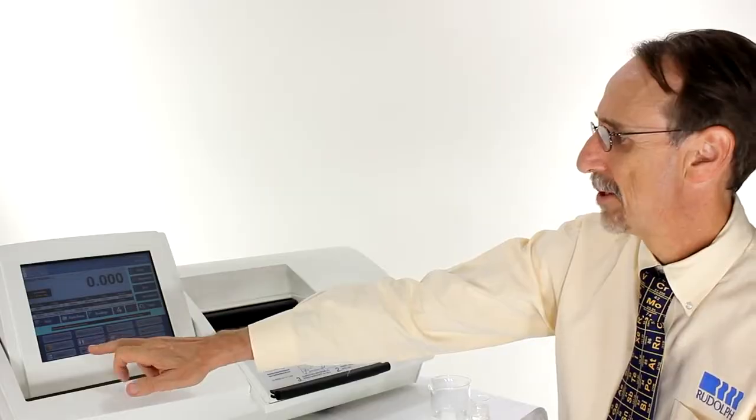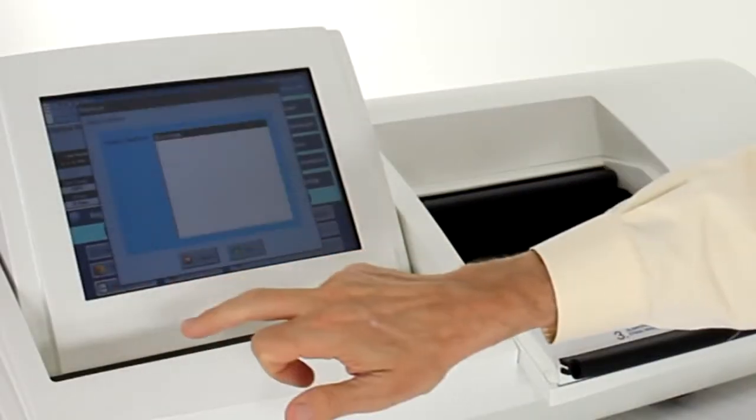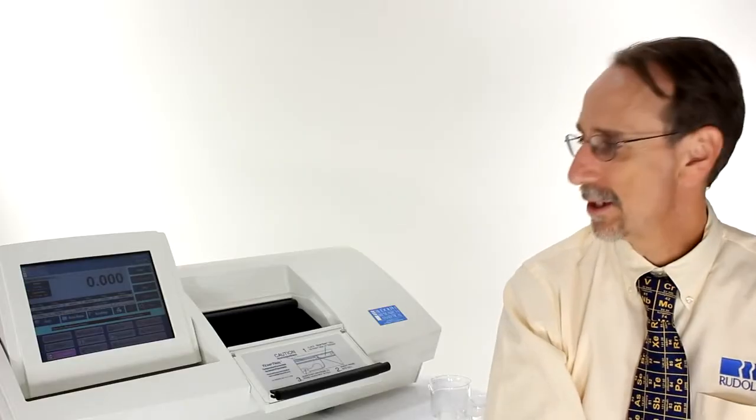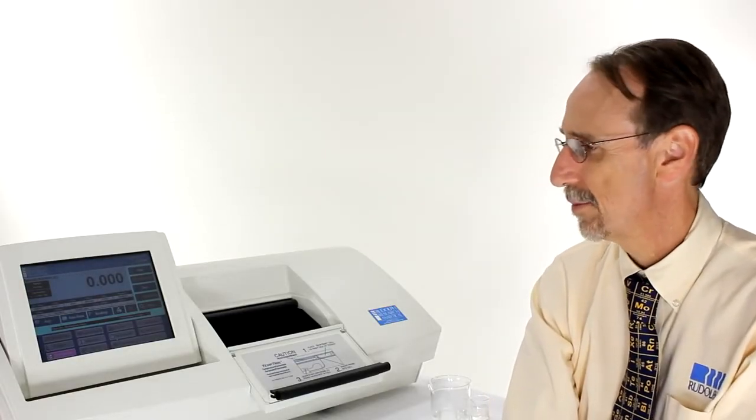With the Polarimeter the first step is to select the method. Press methods, select the method, press set. In this case I'm measuring sucrose so I've selected the sucrose method.